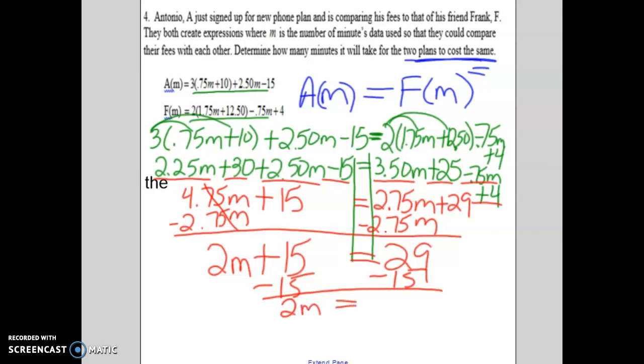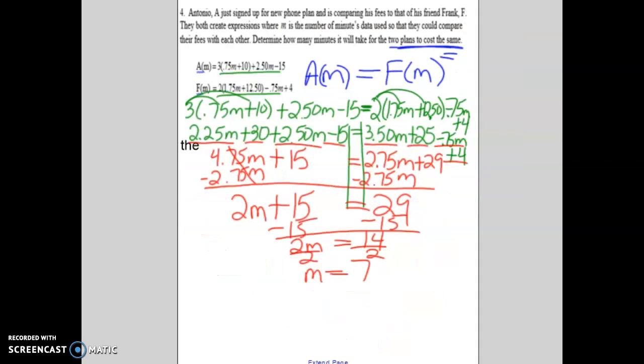Let's subtract 15 on both sides, end up with 2m equals 14, undo multiplication with division, and we're left with 7. 7 what? What does that 7 mean? Well, that 7 simply just means that after 7 minutes, the two plans would cost exactly the same.